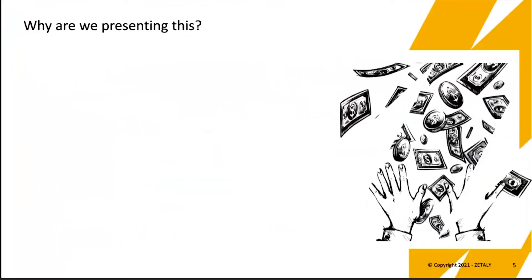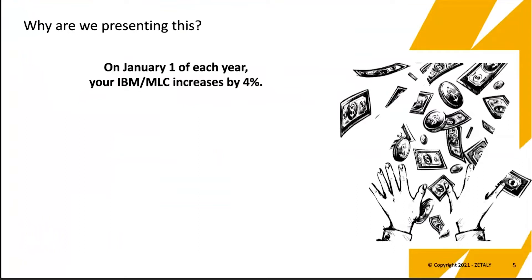Why are we presenting this? On January the first of each year, your IBM MLC increases by 4%. If you're an IBM mainframe user using MLC products, you don't get a choice - you have to pay the 4%, you're legally obliged. So what does that actually mean to you? At the end of or beginning of February, you run your SCRT, send it off to IBM, and about six to eight weeks later you get an invoice - probably about now for your February usage. And you'll have noticed it's gone up by 4%.